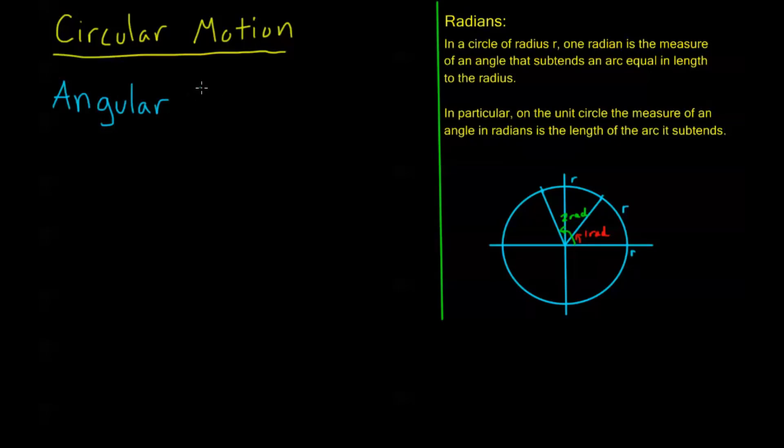We have two different kinds of circular motion we can talk about. One is angular speed. Now, angular speed, we usually denote as this character, omega. It just looks like a W. It's kind of rounded at the bottom, right?